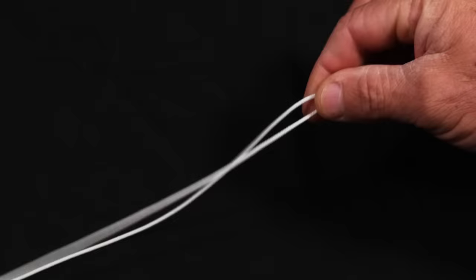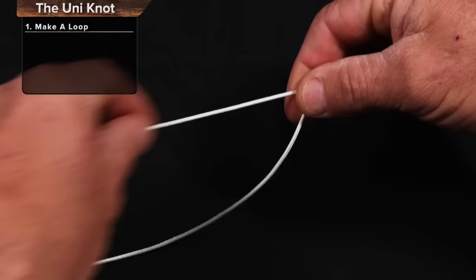So here's how to tie the Uni Knot onto a hook. We're going to put it through the eye of the hook, leave yourself plenty. We're going to double this back around so that you have a loop right here.